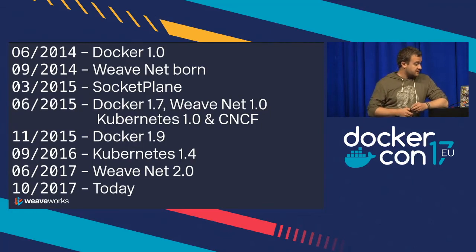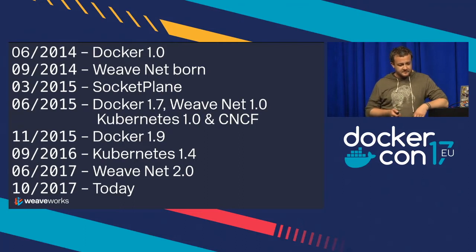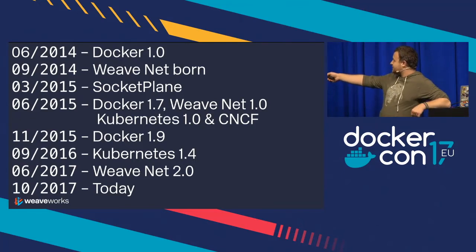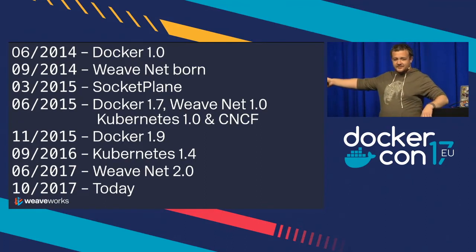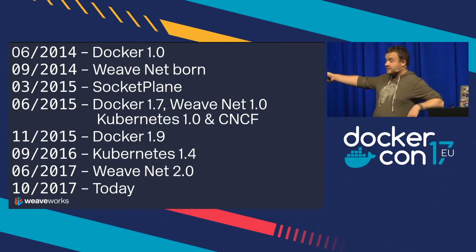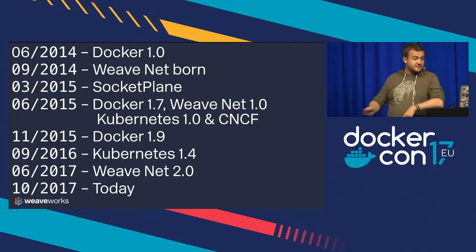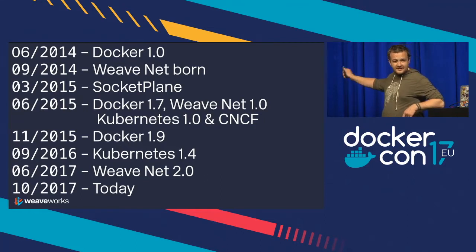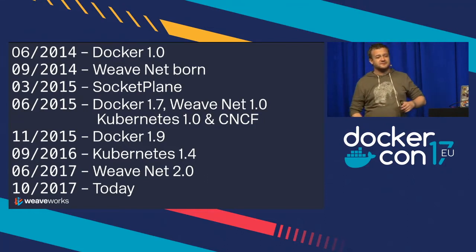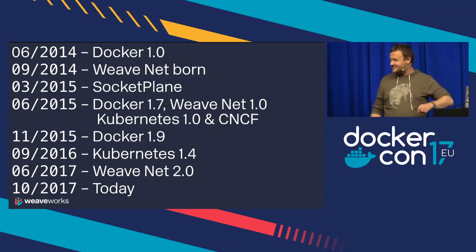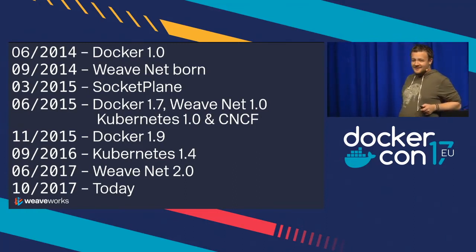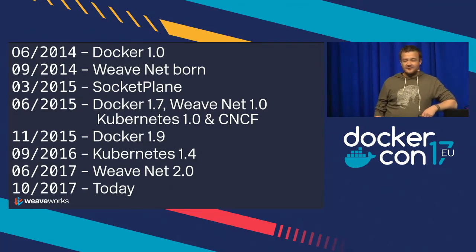The Socketplane team joined Docker and started working on LibNetwork and network plug-ins. A lot of things happened in 2015. We got Docker 1.7 with experimental LibNetwork, WeaveNet 1.0 as an experimental plug-in for LibNetwork, Kubernetes 1.0, as well as the Cloud Native Computing Foundation — all around June 2015, around the time of DockerCon in San Francisco.